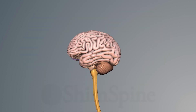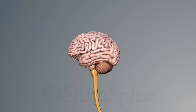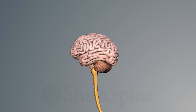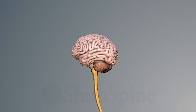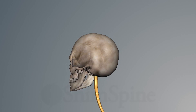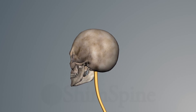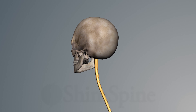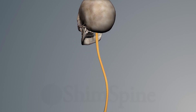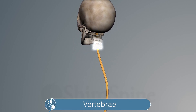The brain and the extension of the brain, the spinal cord, and the individual nerves are easily damaged. That is why the brain is encased in a very hard bone called your skull — very protective. In addition, the extension of the brain, the spinal cord, is protected by a bone of the spine called the vertebrae.